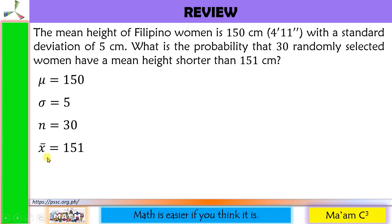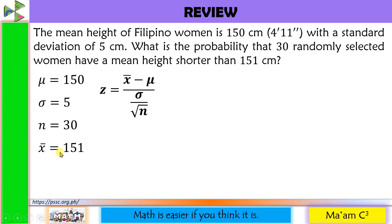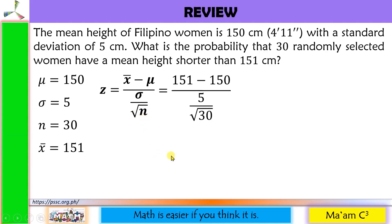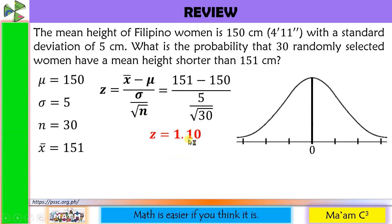Since we are given the sample mean, we're going to use this formula. Let us substitute 151 for x-bar, 150 for mu, 5 for sigma, and 30 for n. This will give us 1.10. Next, let us sketch the normal curve and locate 1.10 — here is 0, positive 1, and somewhere here is 1.10.